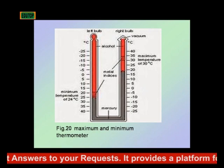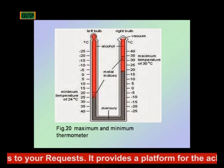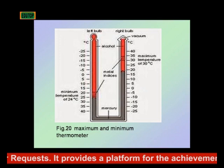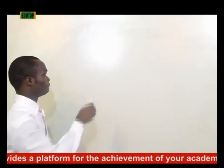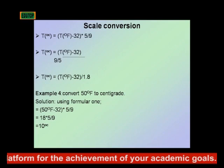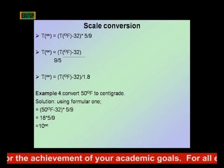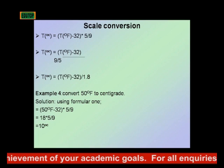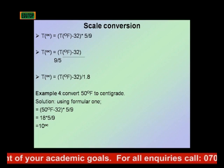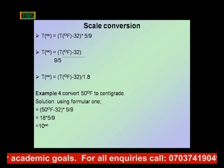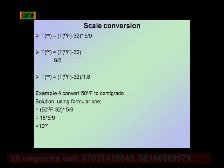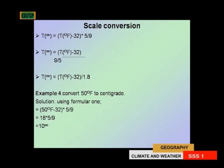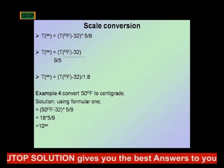We will now look at scale conversion. Consider the following formulas. Formula 1: Temperature in degrees Celsius equals temperature in degrees Fahrenheit minus 32, times 5, divided by 9.